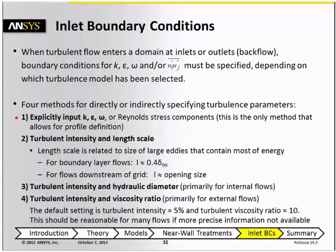The values can be input explicitly, and this is the only method that allows for profile definition, so if you wanted to use a non-uniform profile, this would be the method that you would use. However, there is a problem with this, because although the turbulent kinetic energy is relatively physically intuitive, variables like epsilon or omega are not very intuitive, and they're difficult or even impossible to measure.